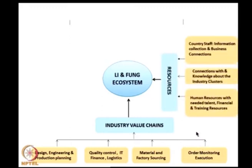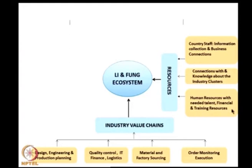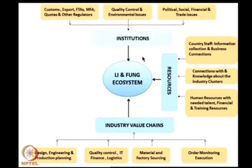The resources include country staff — Li and Fung staff in each country — for information collection and business connections. Their function is to connect with people, collect information, and pass it to headquarters. There are also connections with and knowledge about industry clusters and industry partners. Human resources with needed talent, finance, and training resources. These are the resources we have.